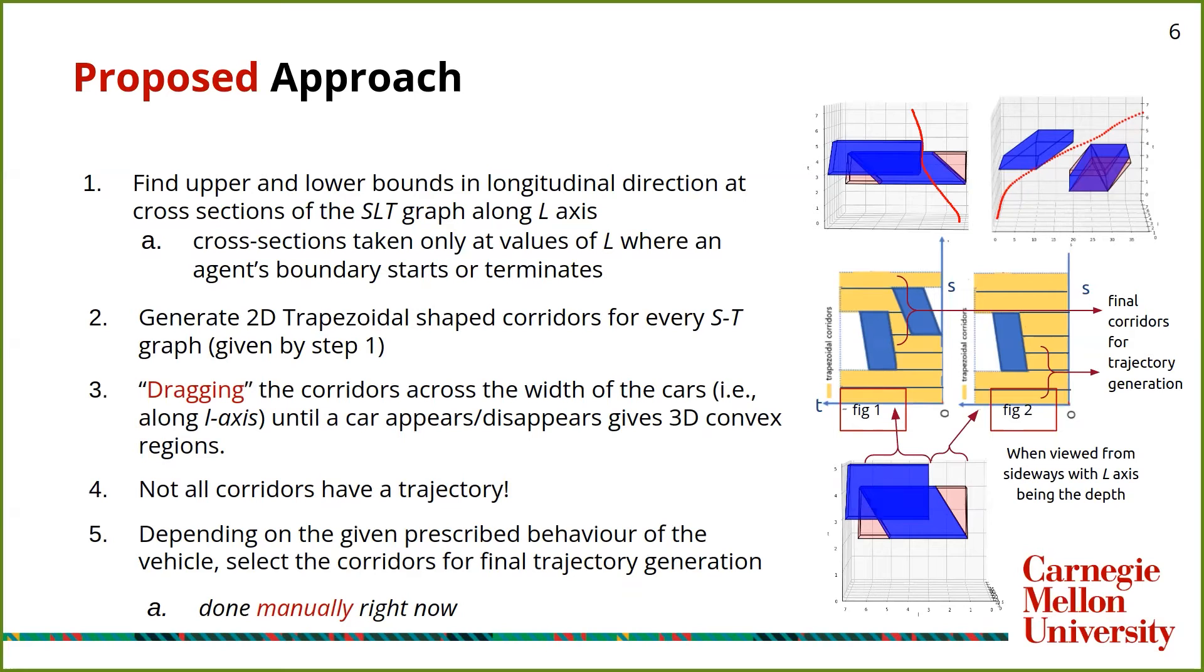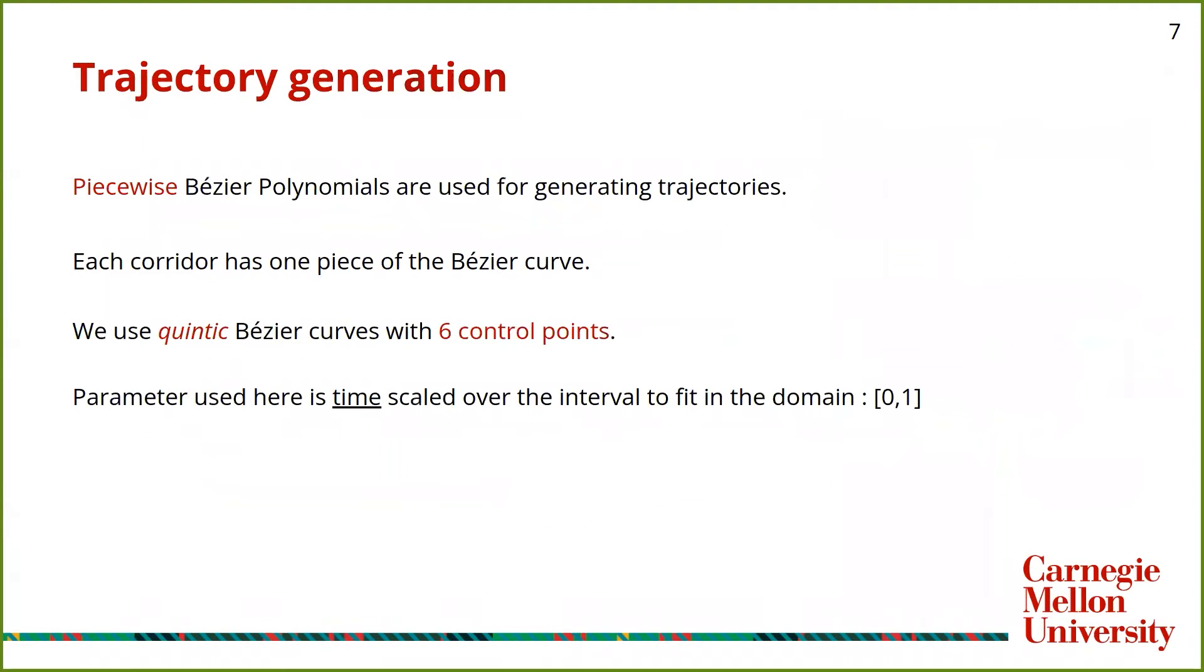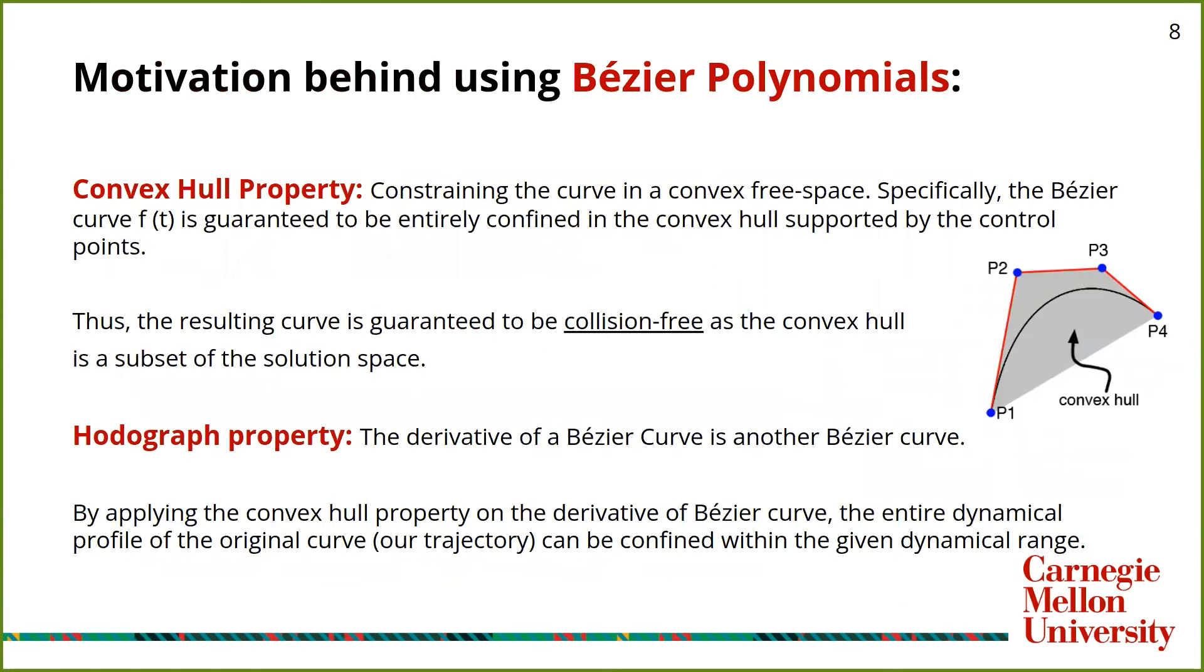Once we have the search space for our optimization, we use piecewise Bezier curves to find a trajectory in each of the corridors. Our motivation to use Bezier polynomials is its convex hull property and the hodograph property. Convex hull property constrains the entire trajectory to lie in the convex free space and be collision-free. The hodograph property constrains the dynamic profile of the whole trajectory.